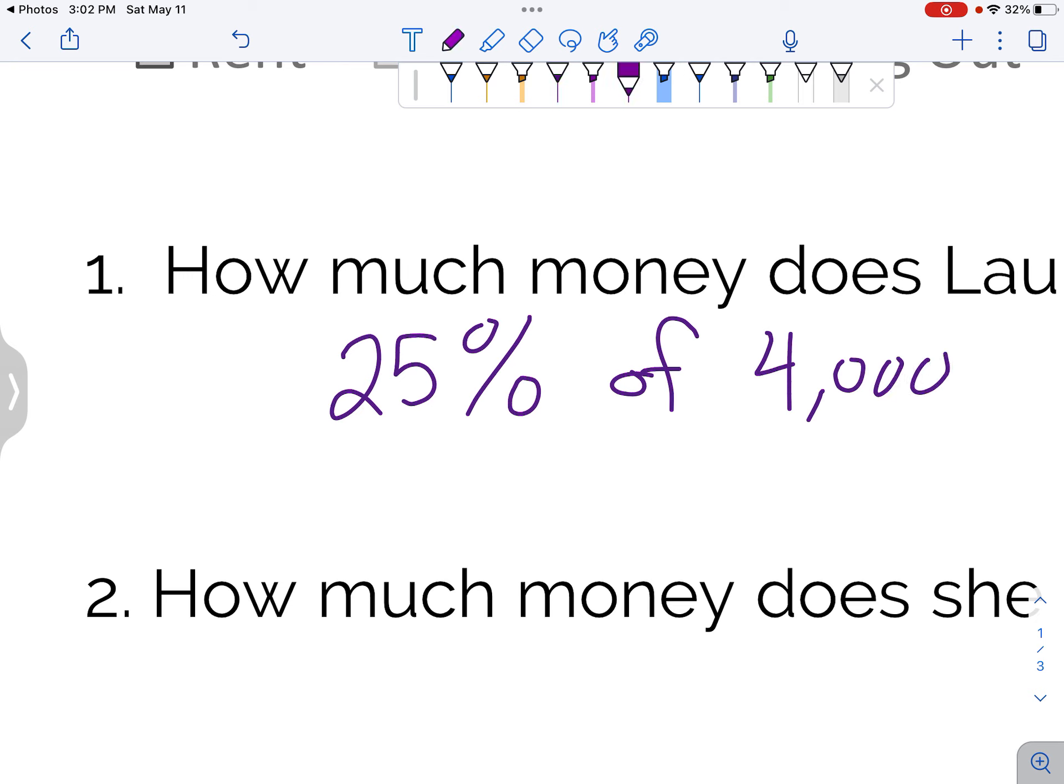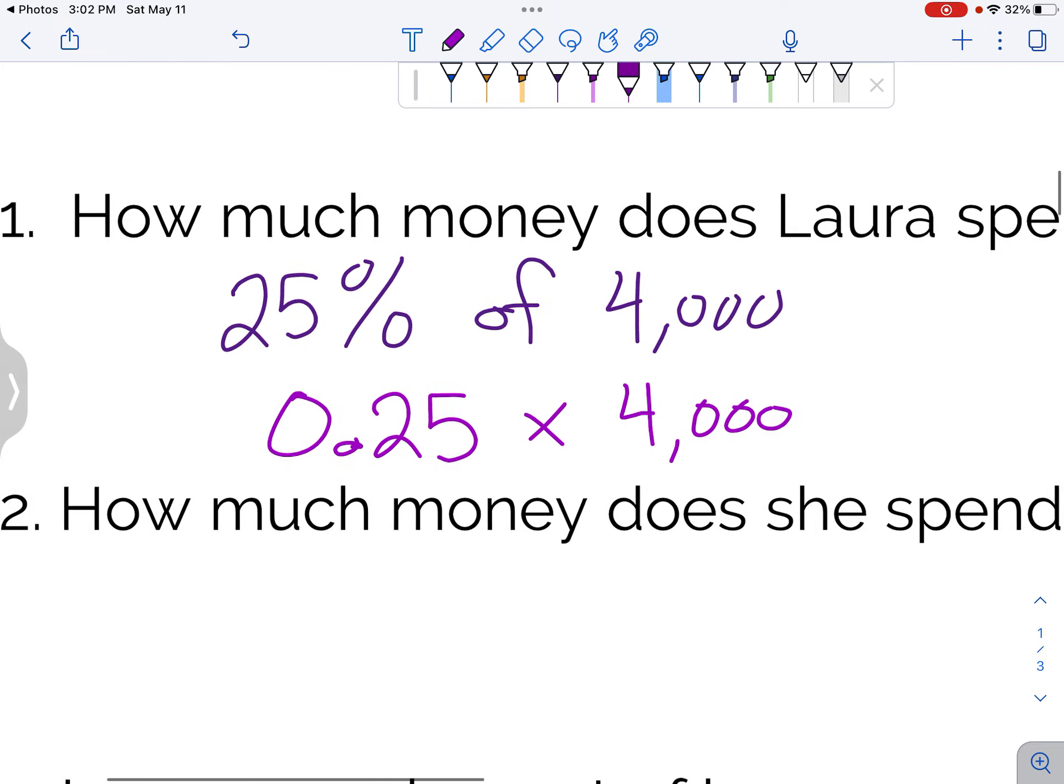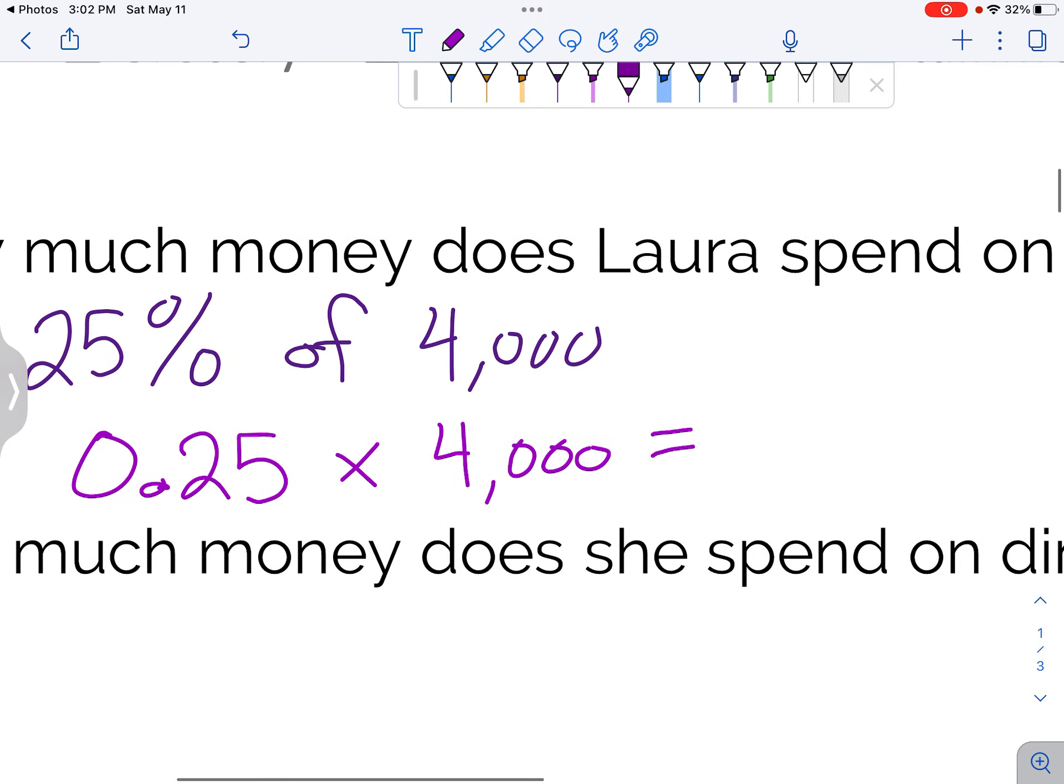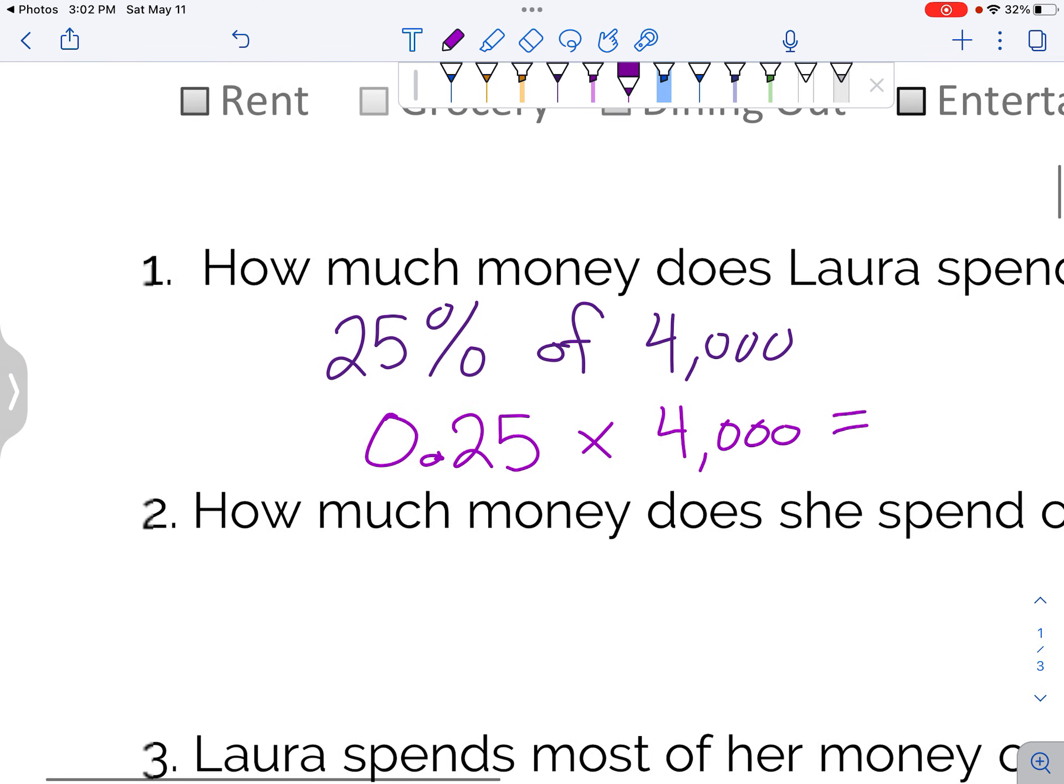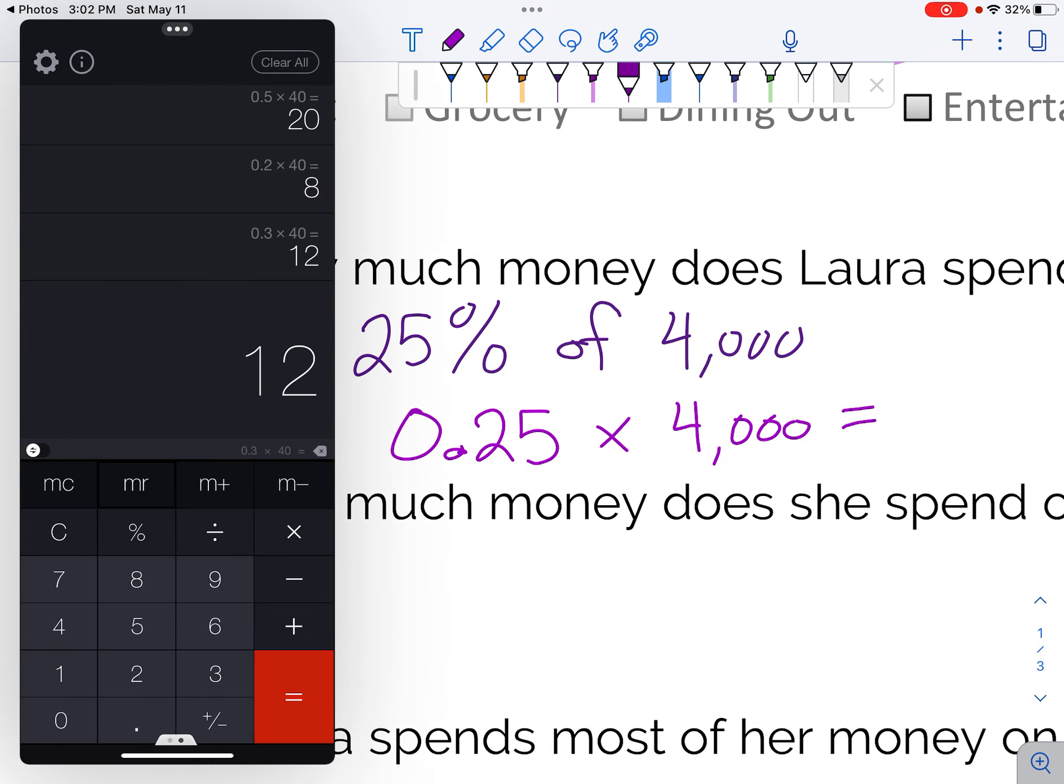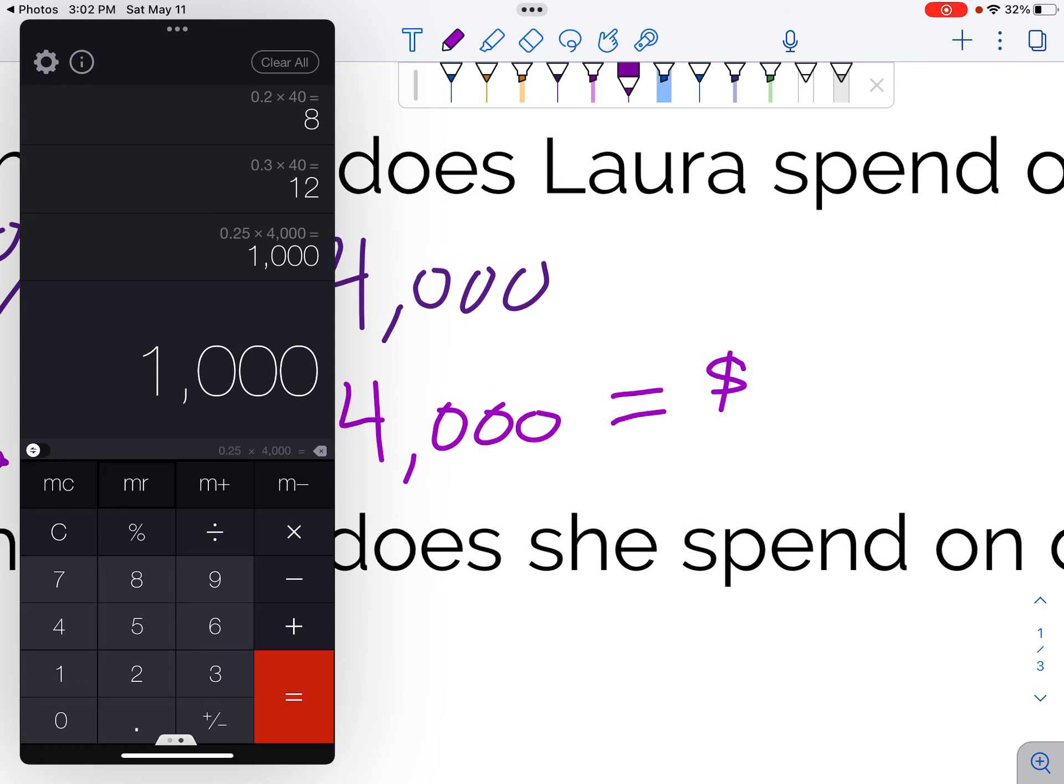And if we're putting that in our calculator, that's 0.25 times $4,000. Again, we're going to multiply by this decimal that's less than 1, because she has to spend less than $4,000 on her groceries. Here we go. 0.25 times 4,000 is $1,000. She spends $1,000 on groceries.